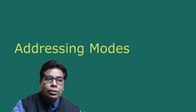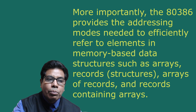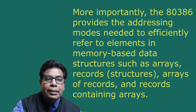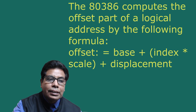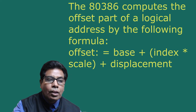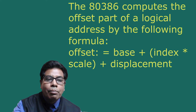Now let us look at addressing modes. The 80386 provides register and immediate addressing modes for operands located in registers or in instructions respectively. More importantly, the 80386 provides addressing modes needed to efficiently refer to elements in memory-based data structures such as arrays, records, array of records, and records containing arrays. A program specifies the offset part of the logical address using one of the 80386 memory addressing modes. The 80386 computes the offset using the formula: offset = base + (index × scale) + displacement.